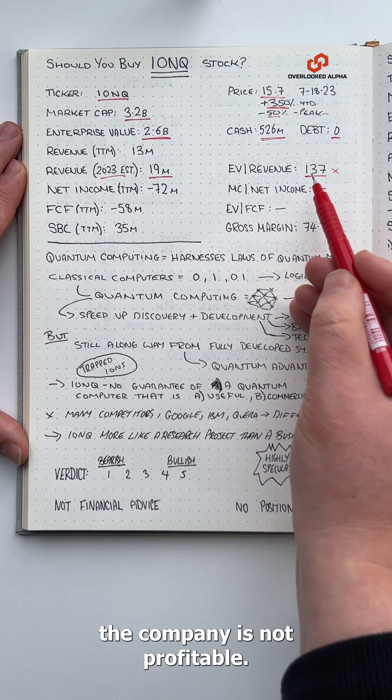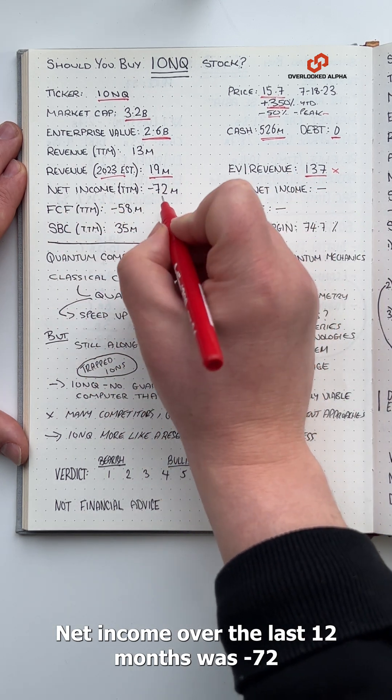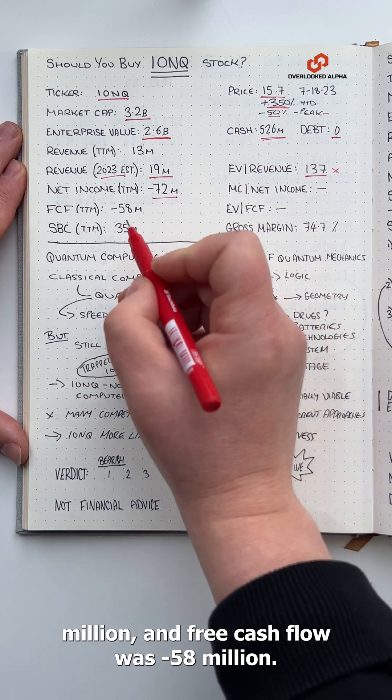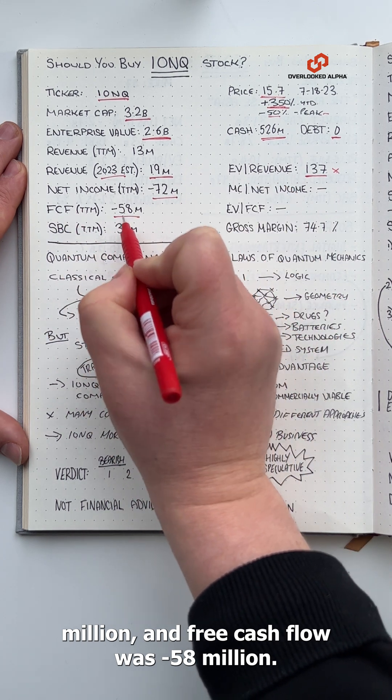And unsurprisingly, the company is not profitable. Net income over the last 12 months was negative $72 million and free cash flow was negative $58 million.